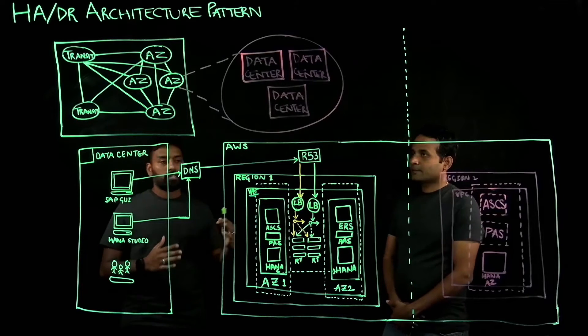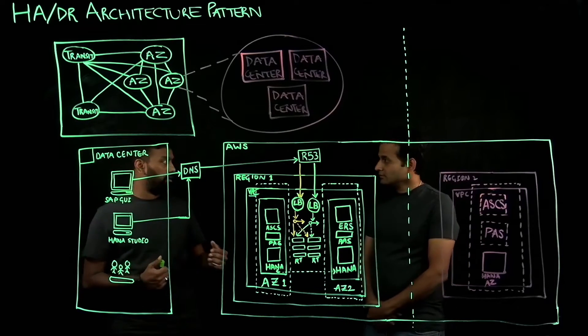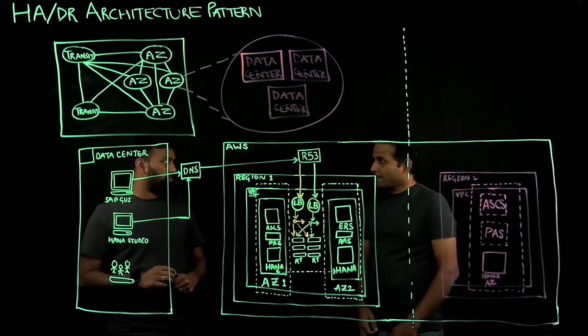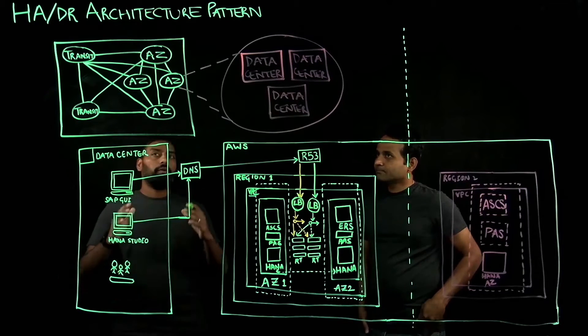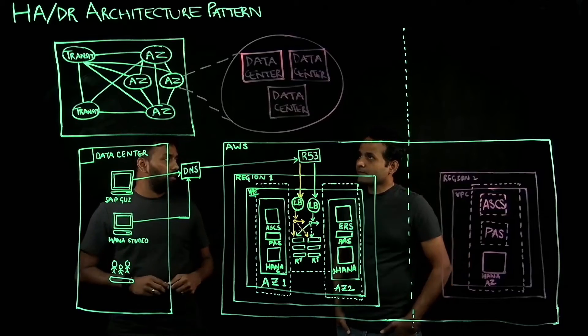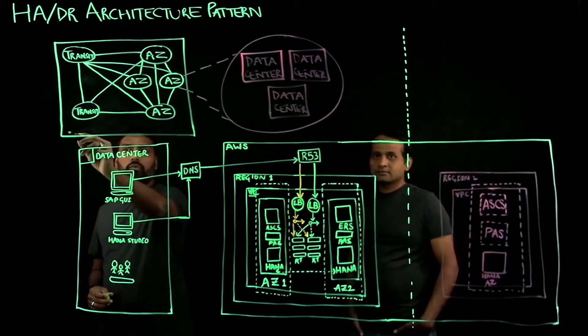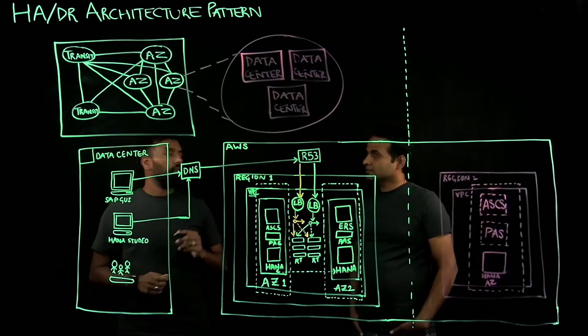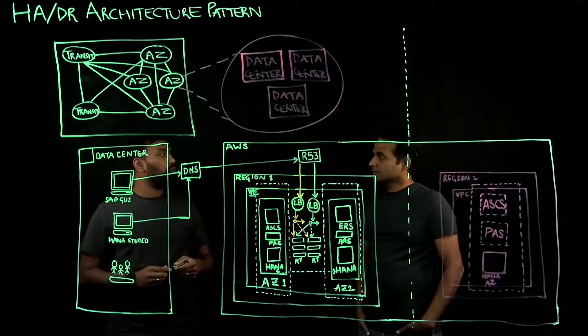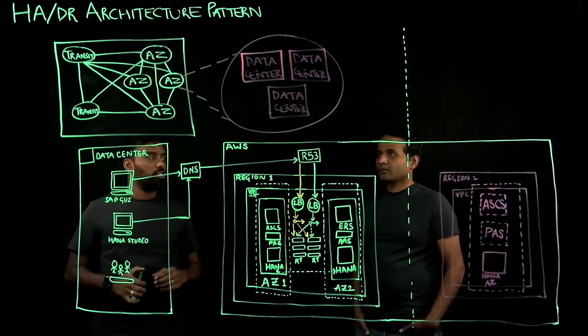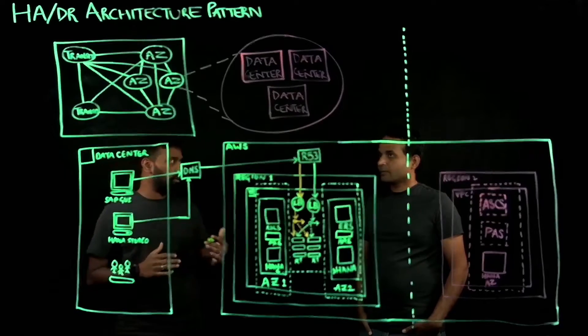Absolutely. Before I talk about SAP high availability, I'll take a step back and explain what is AWS global infrastructure. When you talk about AWS global infrastructure, we have AWS regions which are physical locations in the world, and within a region you have two or more availability zones which are separated by a meaningful distance of 60 miles or 100 kilometers.